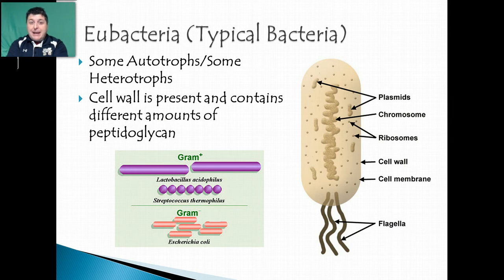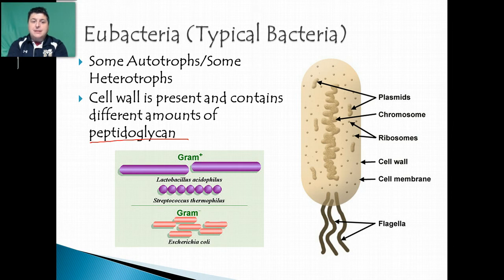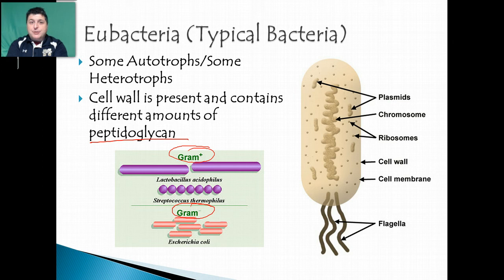Our typical bacteria — the eubacteria — don't live in extreme environments; we encounter these all the time. Some live in our guts, and they're what we use to make yogurt. The big thing about eubacteria is they do contain cell walls with peptidoglycan, that carbohydrate-amino acid complex, but they have it in differing amounts. As a result, using a crystal violet stain stains different bacteria in different ways, and we call this gram-positive versus gram-negative bacteria. This is a basic test a doctor can do because different bacteria respond differently to antibiotics, so by quickly knowing what kind of bacteria we're dealing with, we're able to prescribe an appropriate course of treatment.